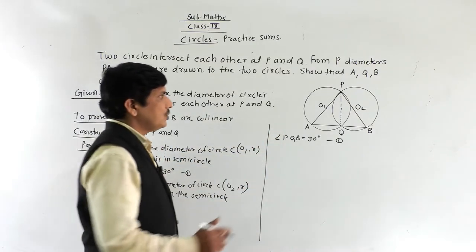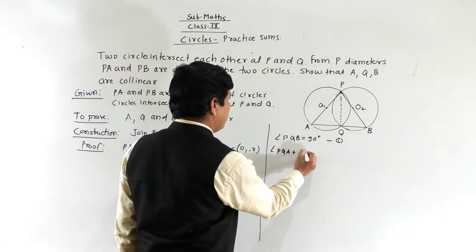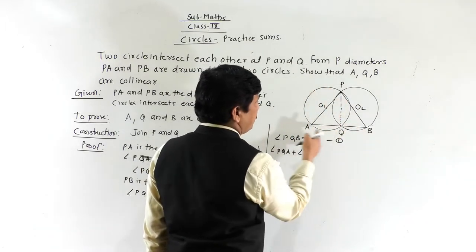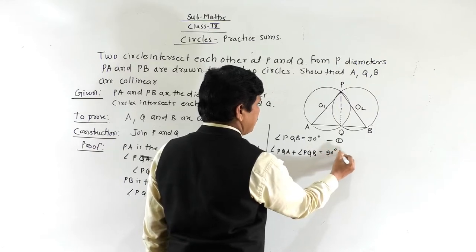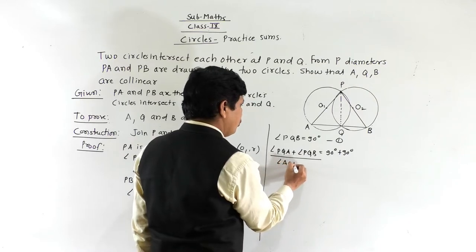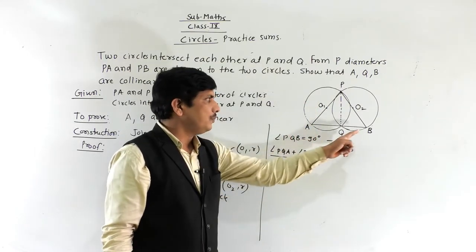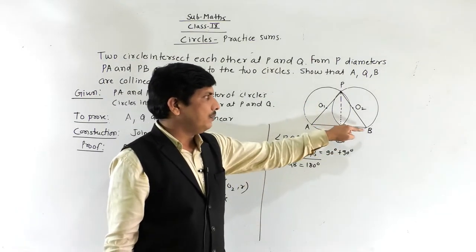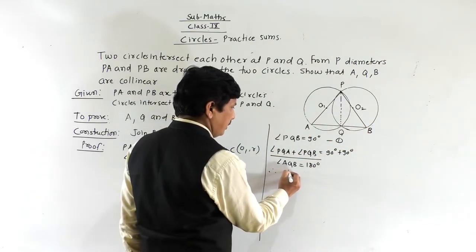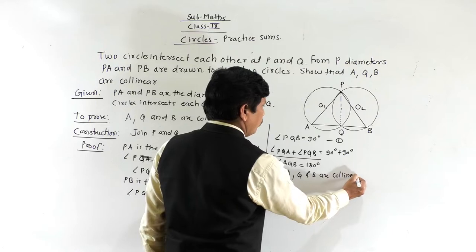By adding the first and second results: angle PQA plus angle PQB equals 90 degrees plus 90 degrees. This addition gives angle AQB equal to 180 degrees, meaning angle AQB is a straight angle. Therefore, A, Q, and B lie on the same line and are collinear points.